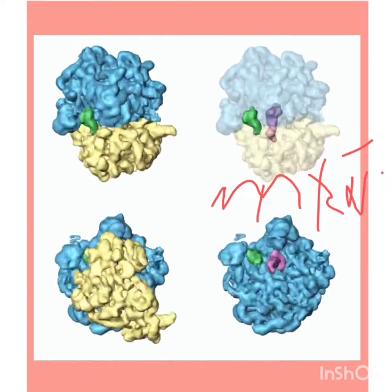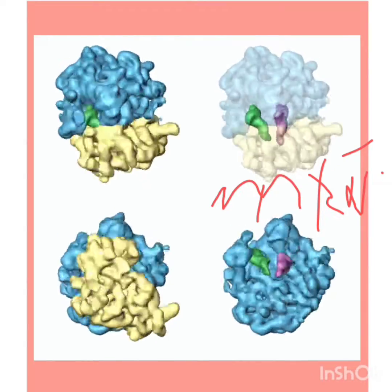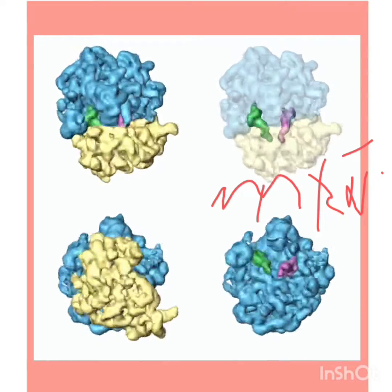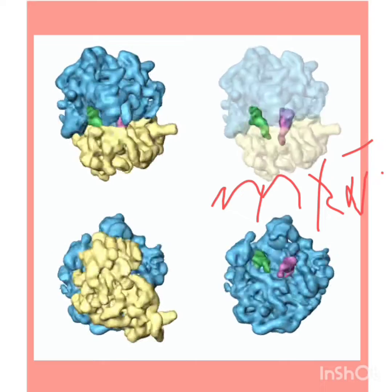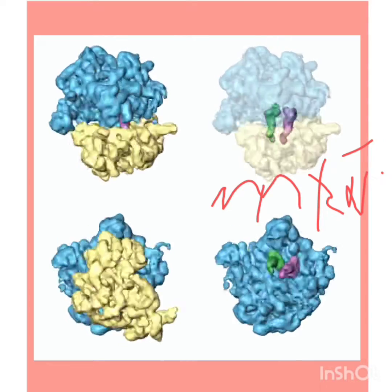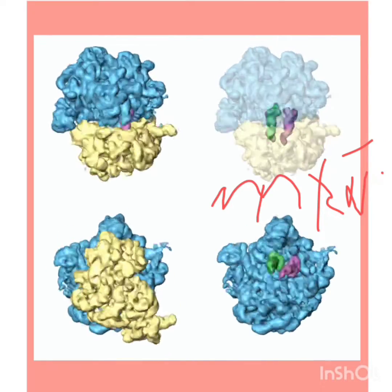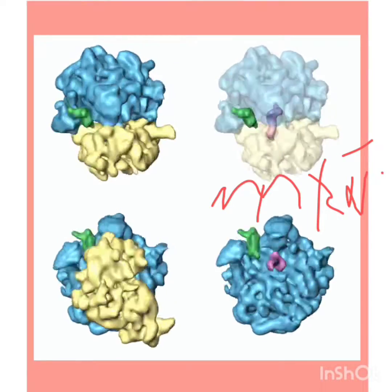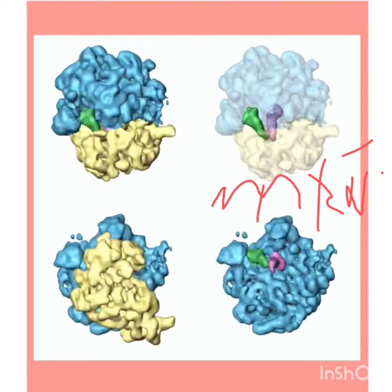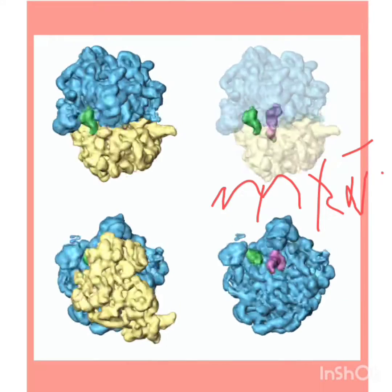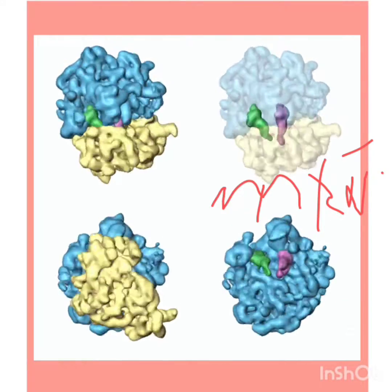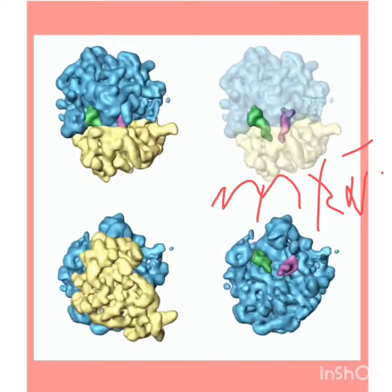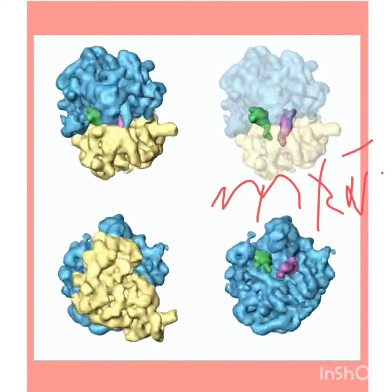Ribosomes are the cellular machines that make proteins — the molecules that carry out the majority of life functions. To make proteins, cells need to make an abundance of amino acids, the raw material of proteins. So definitely ribosomes need ATP and they use the energy of the cell.